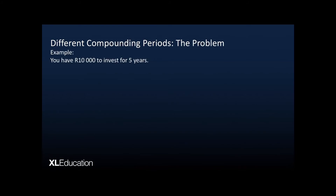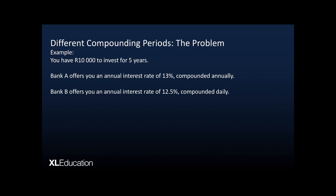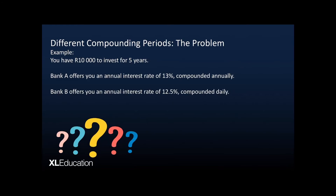Now we have a problem. You have 10,000 rand to invest for five years. Bank A offers 13% per annum compounded annually, whereas Bank B offers 12.5% per annum compounded daily. You know compounding daily gives a higher amount, but the annual rate is higher for Bank A — so which one gives a higher accumulated amount? Without calculation, we just don't know.